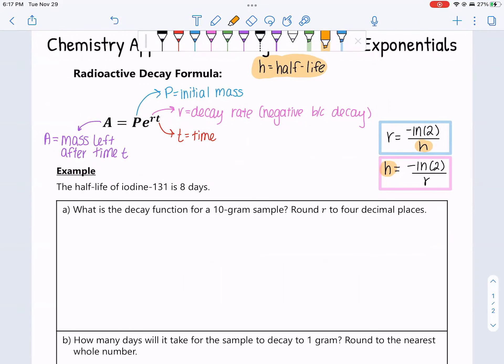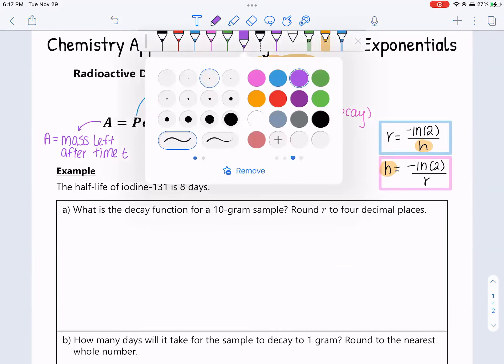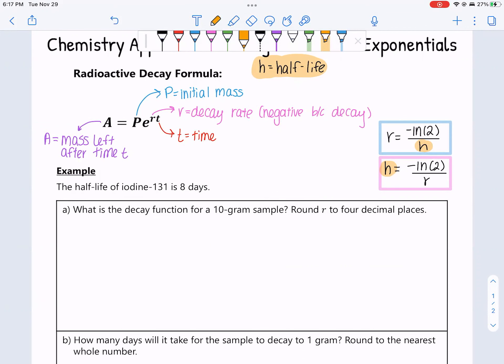Alright. We're good to do some problems now. Here we go. The half-life of iodine-131 is eight days. What is the decay function for a 10-gram sample? Round R to four decimal places. So we are told the half-life. We know half-life. H is equal to eight. We want to find the decay function, which is going to look like this. A equals Pe^rt. And with the function, you don't need to find a value for A or T. You just need to find P and R.